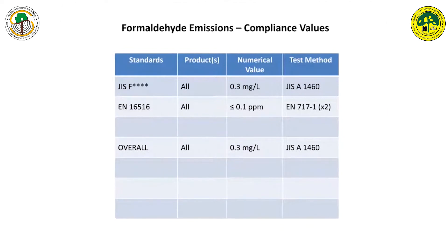The very stringent Japanese F4 star standard mandates a limit of 0.3 milligrams per liter as per the JIS desiccator test. Recently, a horizontally harmonized European standard — EN 16516 — has been implemented since 2018, with Germany being the first to implement it.